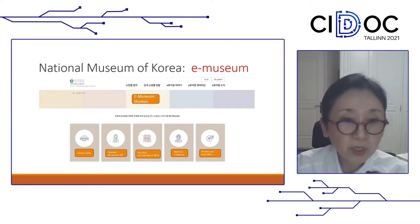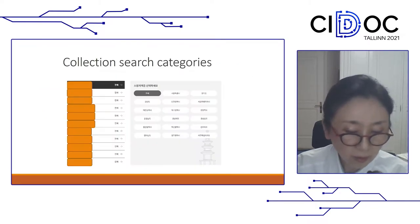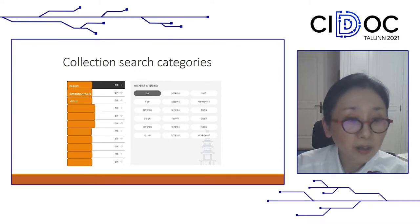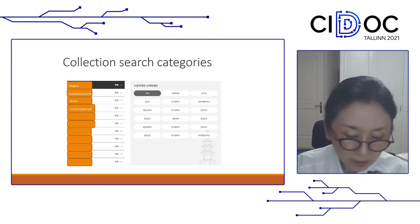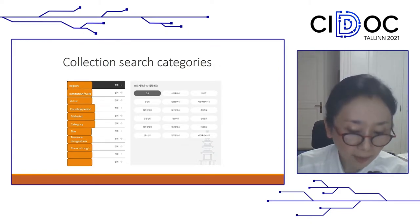One can access these images by theme — flowers and butterflies, national treasures, etc. — or search an object by region, institution, accession number, artist, country, period, material, category, size, treasure designation, place of origin, copyright restrictions, and image tag.